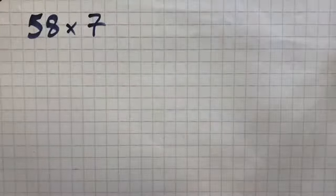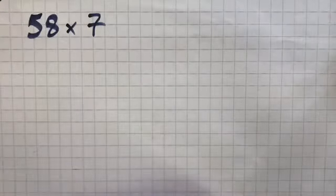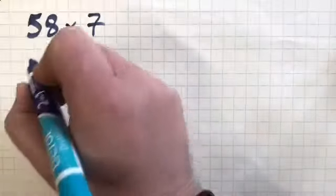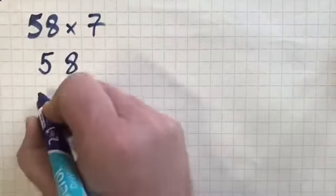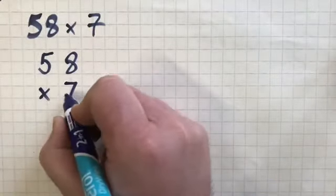Now it will be presented like this in a question. The most important thing is you need to present it in the column format. So we would present this as 58 multiplied by 7.